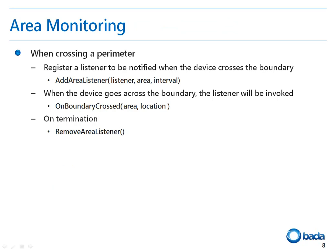On application termination, listening to location updates can be cancelled using the CancelLocationUpdates method. Next, let's look at how area monitoring can be achieved. Area monitoring is getting a notification when a specified boundary is crossed. To monitor the area, the AddAreaListener method is used for registering with the listener. When the device crosses the boundary, the OnBoundaryCrossed callback is invoked. If you receive the OnBoundaryCrossed event, the listener registration is automatically cancelled, and if you want to receive it again, you need to re-register the listener. On termination, the listener can be removed with the RemoveAreaListener method.